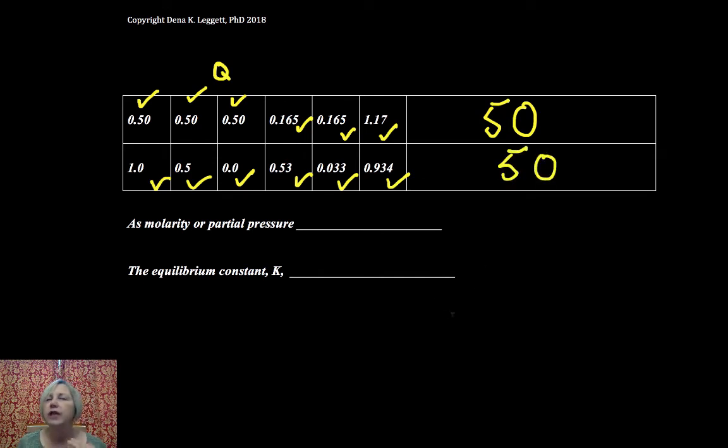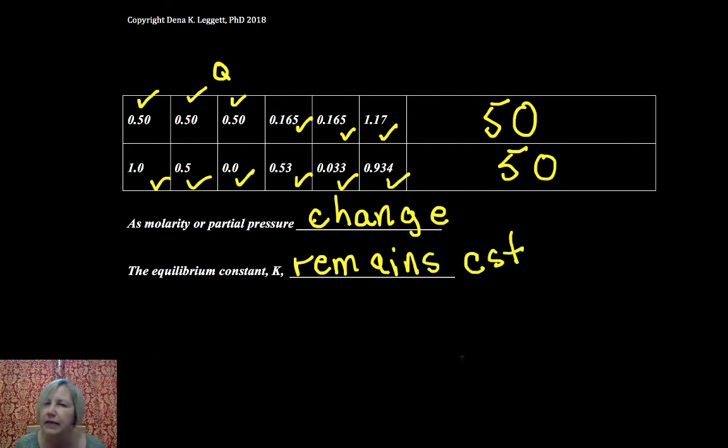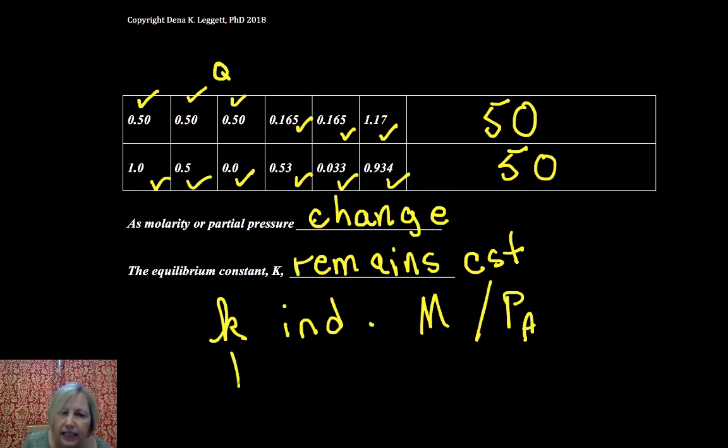Here's the key take-home here. Doing almost a whole video on this. As molarity or partial pressures change, the equilibrium constant K remains constant. I don't know why. It's a big trigger, a big mess up for kids. Just like the rate constant K is independent of molarity or partial pressure, equilibrium constant is independent of molarity and partial pressures. It only changes with T.